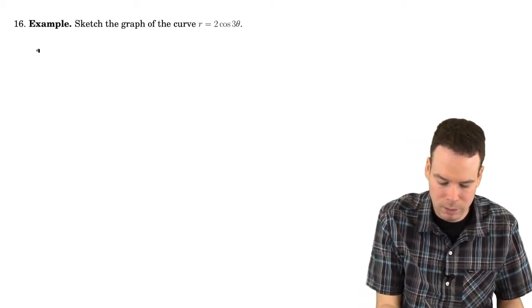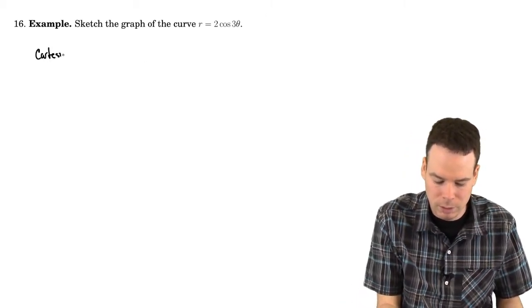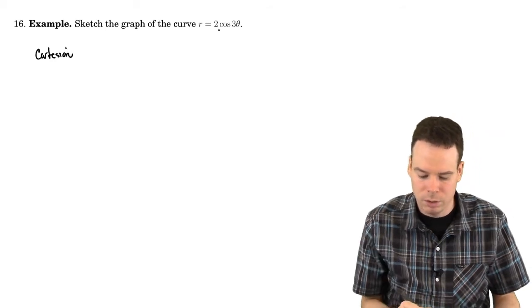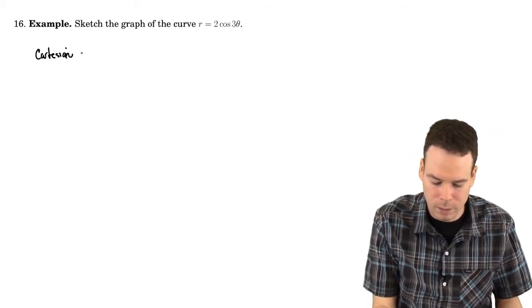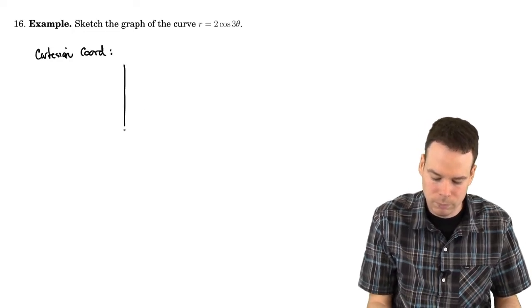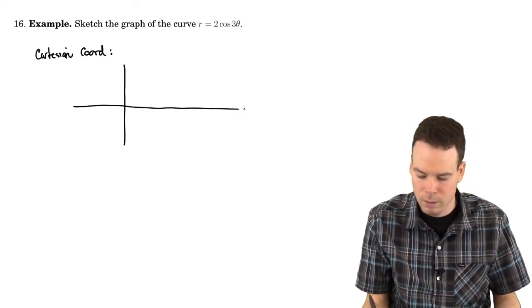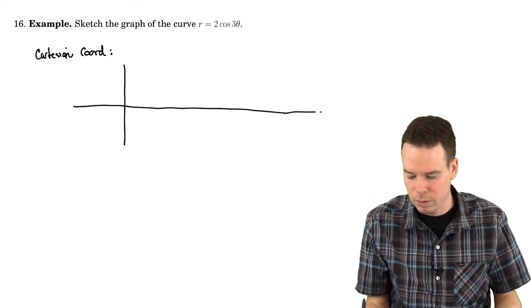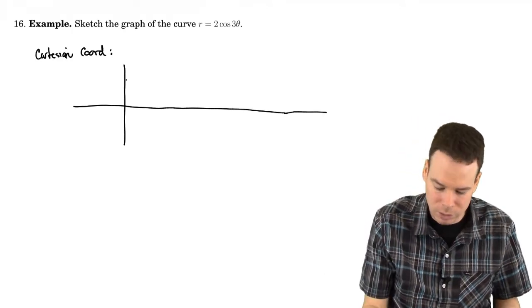So we'll proceed much like we did in the previous case. I'd like to know how r changes with respect to theta. So we'll go to the Cartesian coordinate system first. So this is cos(3θ). So I'm going to start with sketching the cosine function.